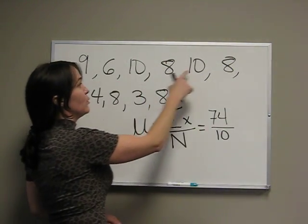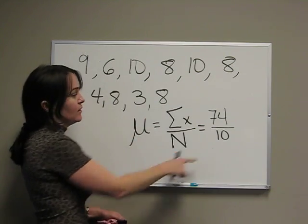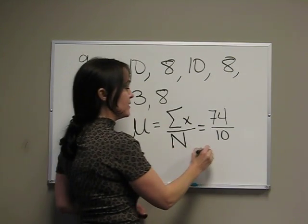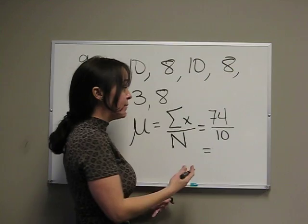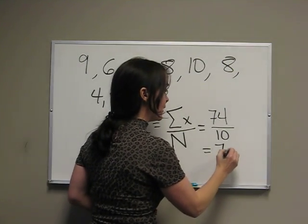There are 10 numbers here: 1, 2, 3, 4, 5, 6, 7, 8, 9, 10. So we divide 74 by 10, which equals 7.4.